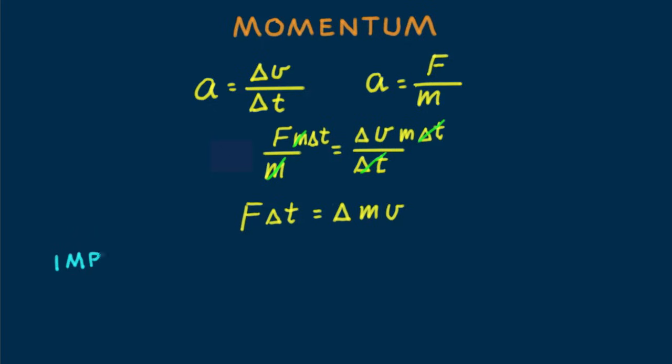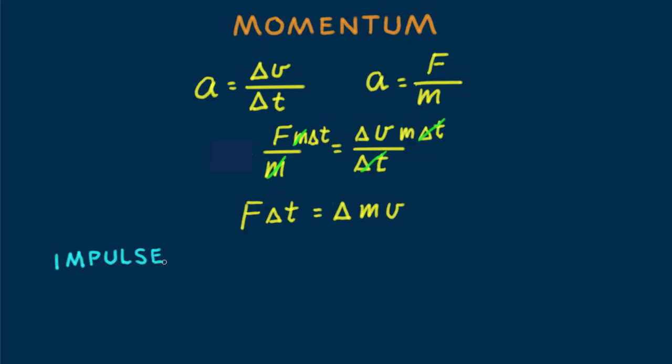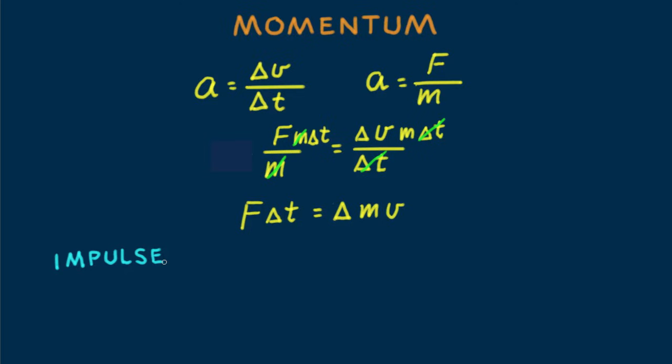The quantity f delta t is called impulse. Or letting delta t simply be t for the time interval, we can say impulse equals ft, which is read impulse equals force f exerted on an object multiplied by the time it acts t.